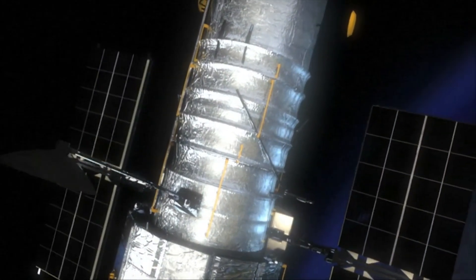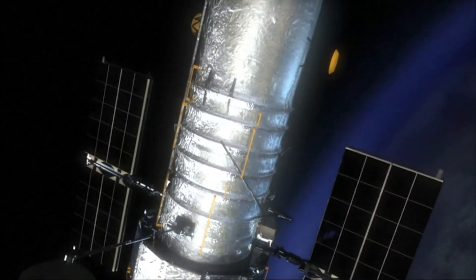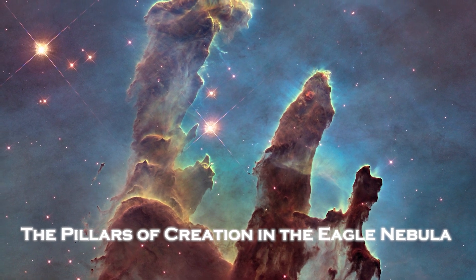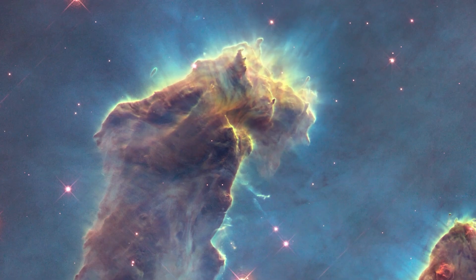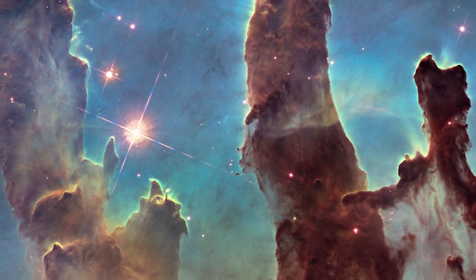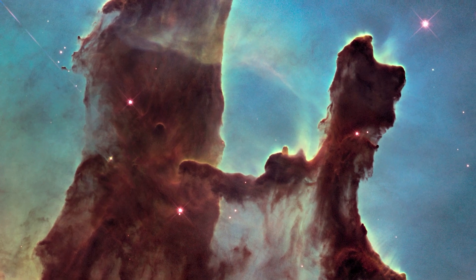One of the Hubble Space Telescope's most recognizable sites has long been the Pillars of Creation in the Eagle Nebula. This structure was visible to the telescope that primarily detects visible light, but the processes of creation within it were not.